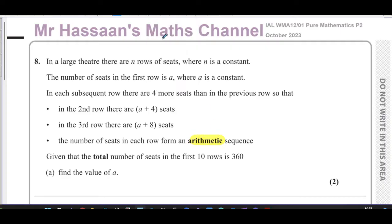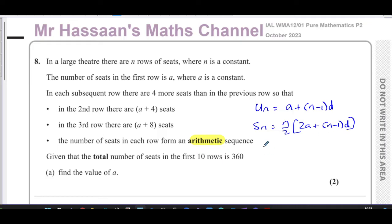When we have an arithmetic sequence, there are two different formulas that should come to mind, and these are in our formula book. One is uₙ = a + (n−1)d. The other is Sₙ = (n/2)(2a + (n−1)d), which can also be written as (n/2)(a + l). The first formula is for finding a particular term; the second and third are for finding the sum of a certain number of terms.